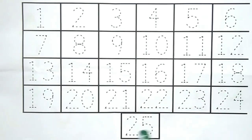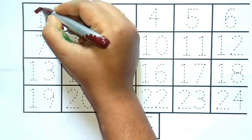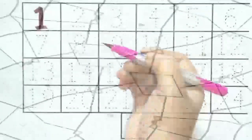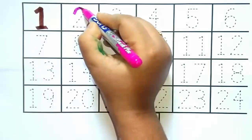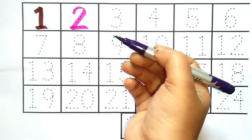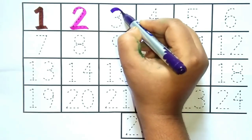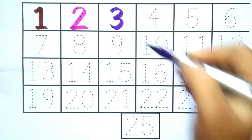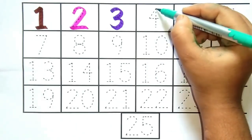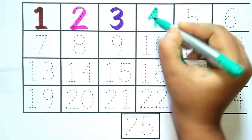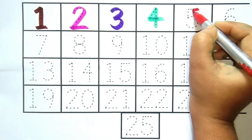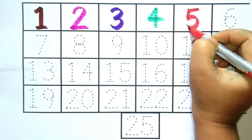25. Brown color, it is number 1. Pink color, it is number 2. Purple color, it is number 3. Green color, it is number 4. Red color, it is number 5.